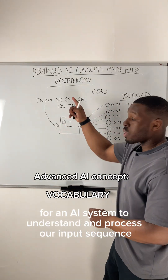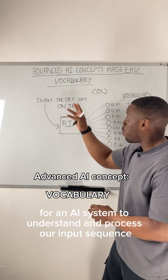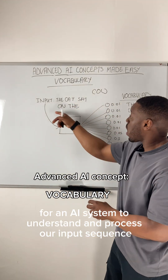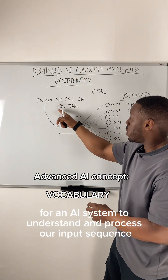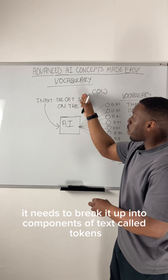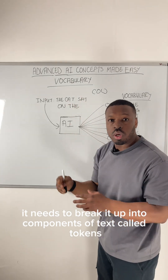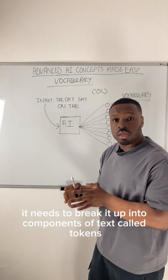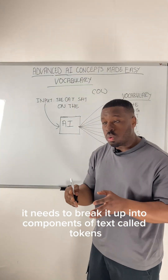For an AI system to understand and process our input sequence, it needs to break it up into components of text called tokens.